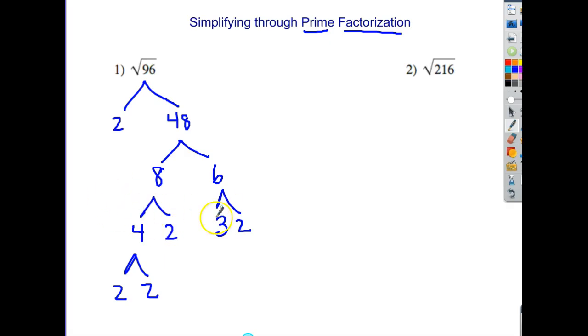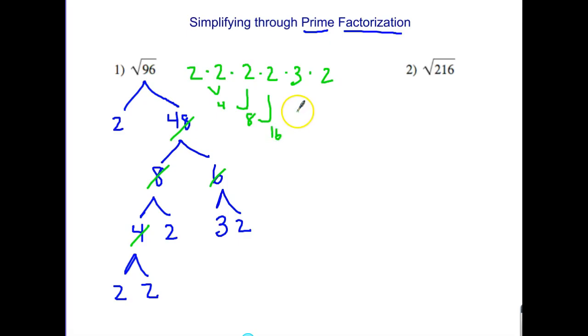What does this mean? Only factors that are at the end of a branch count. So this 4, this 8, this 6, this 48, those don't count. Only the guys at the end. This means that 2 times 2 times 2 times 2 times 2 times 3 is going to be 96. This is 4 times 2 is 8 times 2 is 16 times 3 is 48 times 2 is 96. That's what it means. I've broken it down into all the factors. They're just really small.